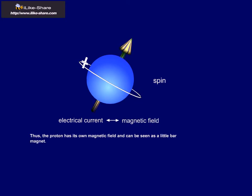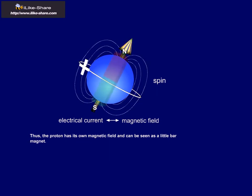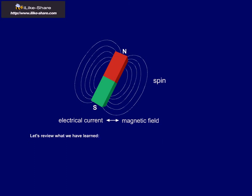Thus, the proton has its own magnetic field and can be seen as a little bar magnet. Let's review what we have learned.